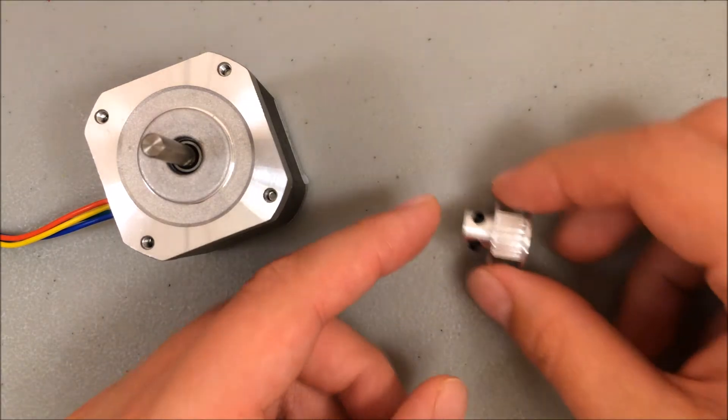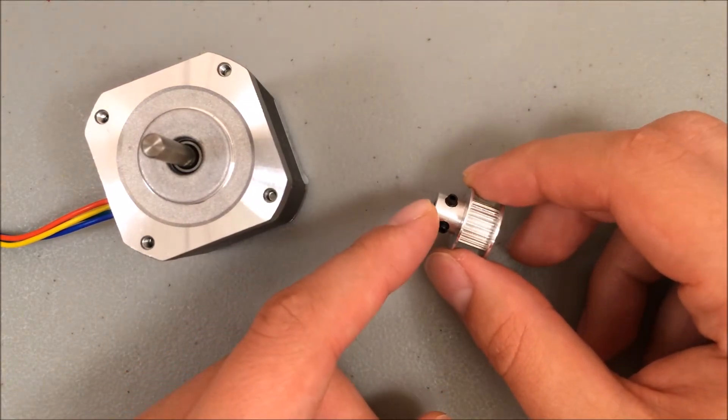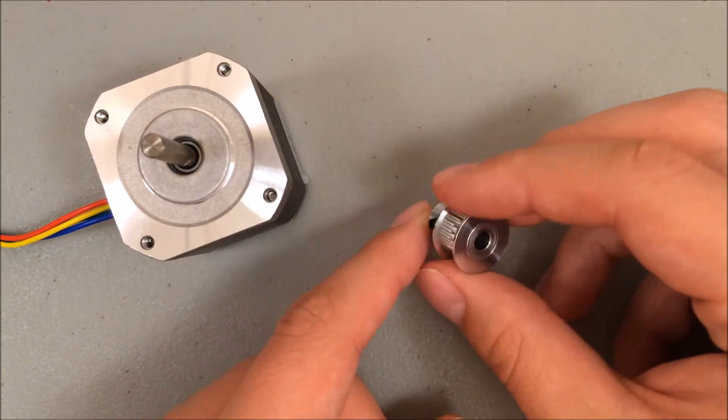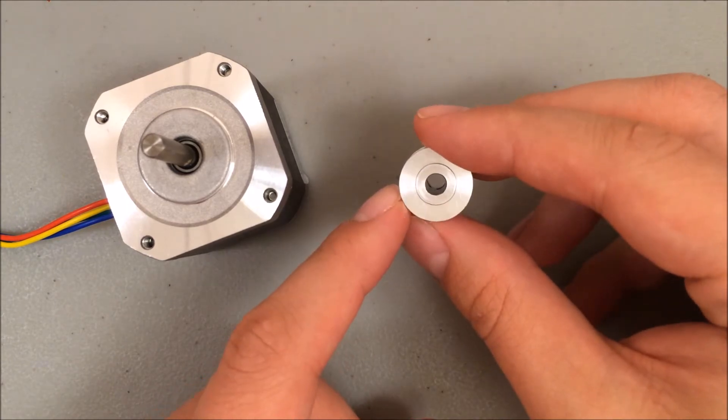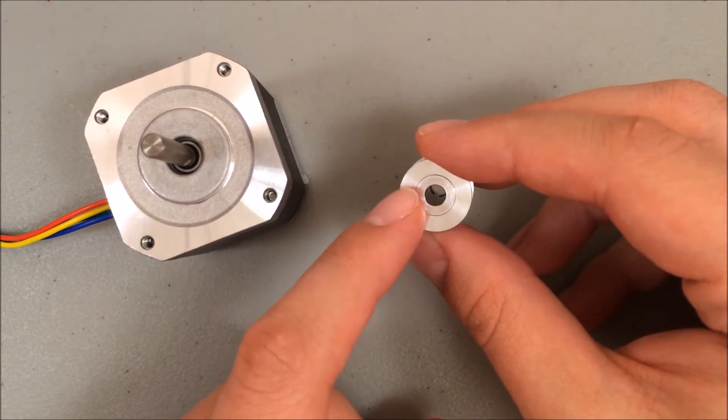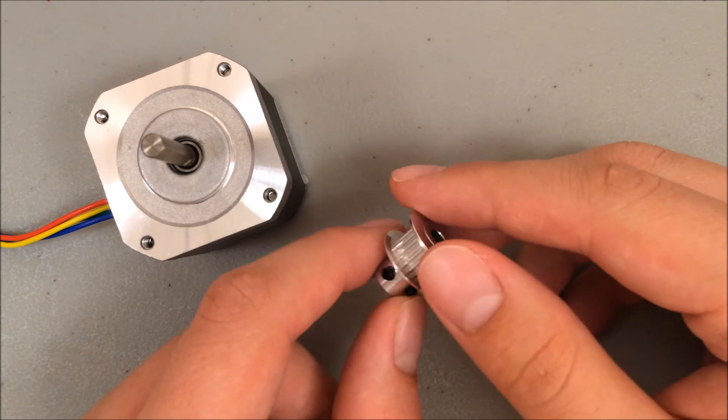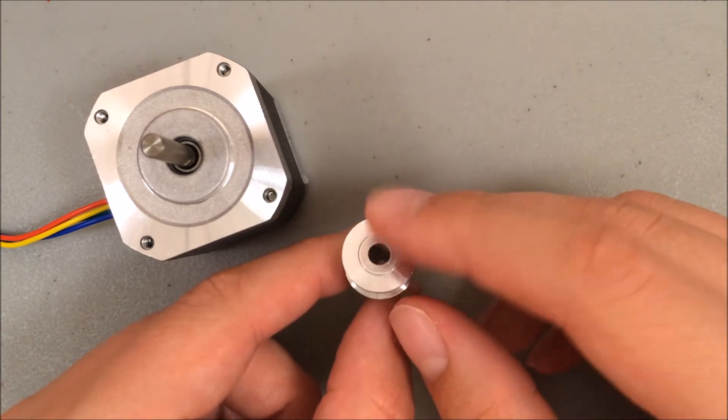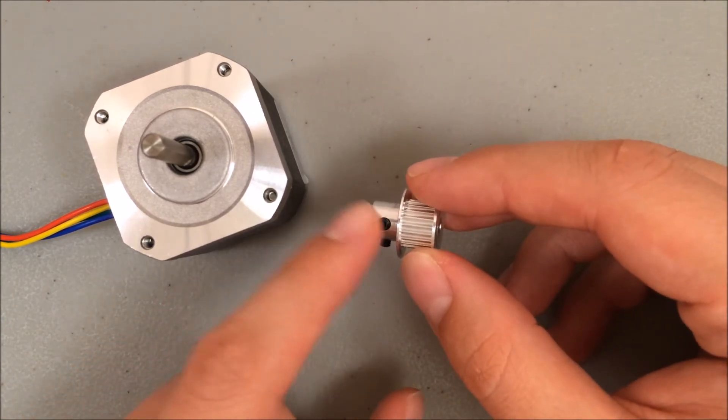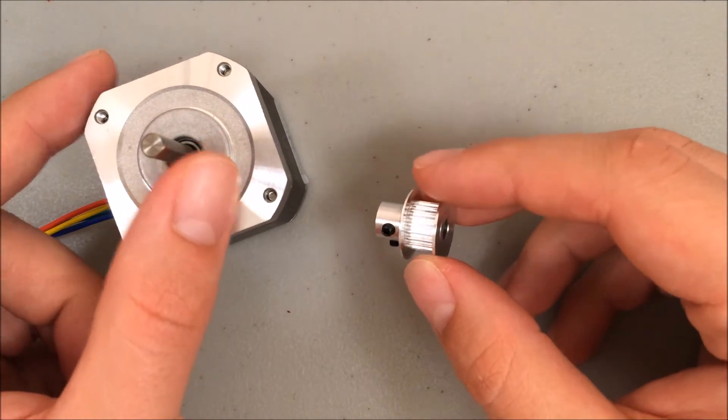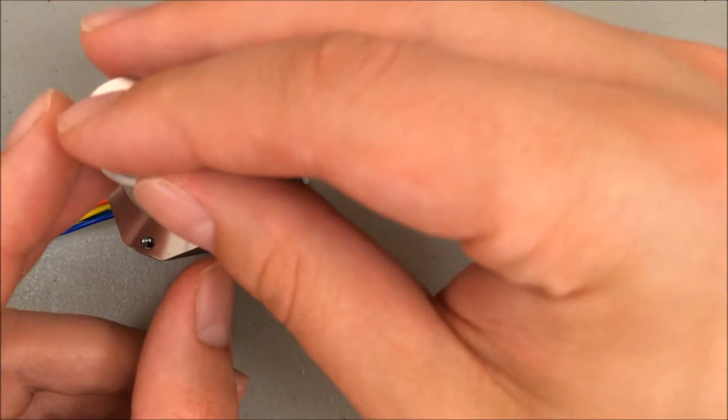I've already attached the set screws into the GT2 pulley but I've only attached them lightly. I haven't tightened them all the way. I can still see clear through the center hole here so that it fits on top of the motor shaft. When I place this on top of the motor shaft I want this larger end to be on top and I want one of the set screws to line up with the flat side of the motor shaft.